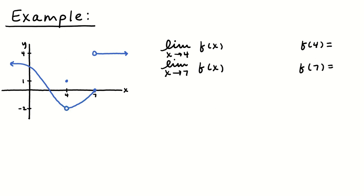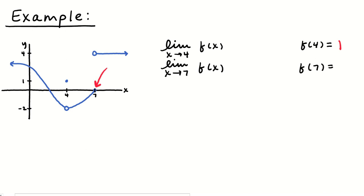Let's work on an example with a couple of limits and questions about the value of the function. Starting with f of 4: that's just what is the height of the graph, and the filled-in circle is at 1, so f of 4 is equal to 1. For f of 7, looking for the dot — it's on the x-axis, meaning y equals 0.